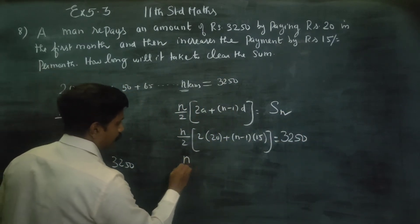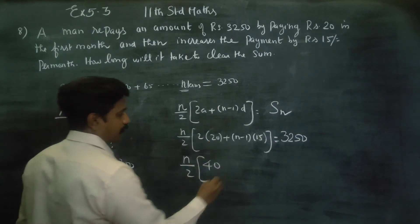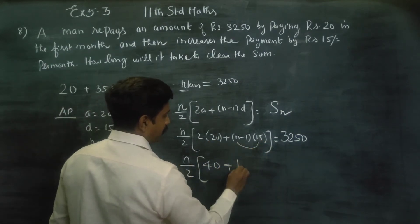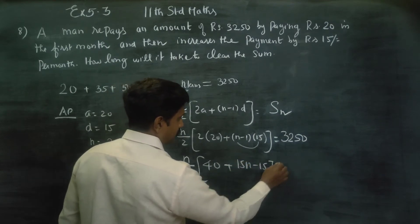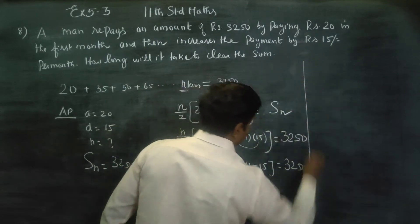Then n by 2, times 2 into 20 is 40, plus 15n minus 15, equals 3250.